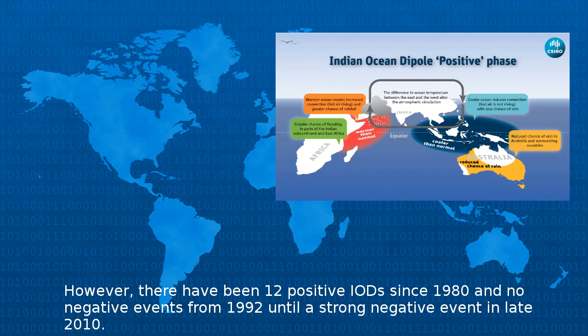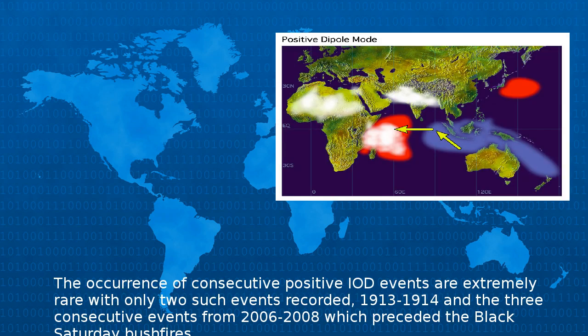However, there have been 12 positive IODs since 1980 and no negative events from 1992 until a strong negative event in late 2010. The occurrence of consecutive positive IOD events are extremely rare, with only two such events recorded: 1913–1914 and the three consecutive events from 2006 to 2008, which preceded the Black Saturday bushfires.